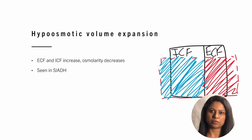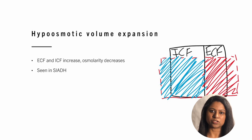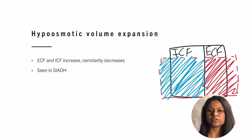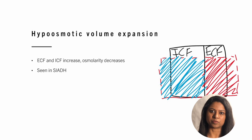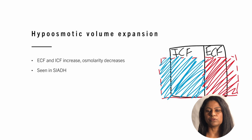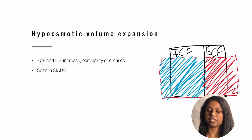Hypoosmotic volume expansion is seen in SIADH, or syndrome of inappropriate ADH secretion. There is retention of plain water which reduces the osmolarity of the ECF. Fluid shifts from the ECF into the ICF, increasing the ICF volume.